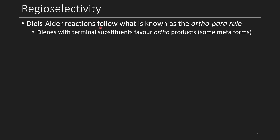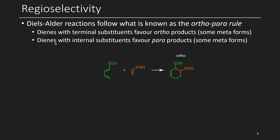Now, regioselectivity. For typical Diels-Alder reactions following normal electron demand, the reaction will follow what's known as the ortho-para rule. Dienes with a terminal substituent favor ortho products — this is pseudo-ortho, kind of like substituents on an aromatic ring — although you will get some small amounts of the meta product forming, where the electron-withdrawing group would be meta to the donating group. And if you have a diene with an internal substituent, it will favor para products, although you will get some meta forming. If you have an electron-donating group in the two position, you'll end up getting pseudo-para type products. These are only the major products.